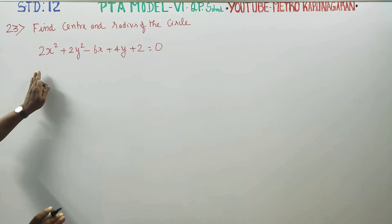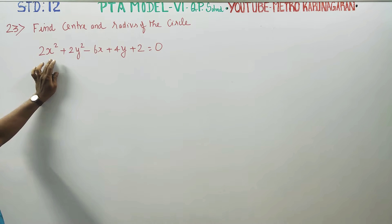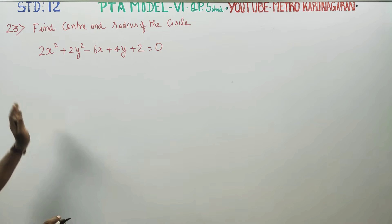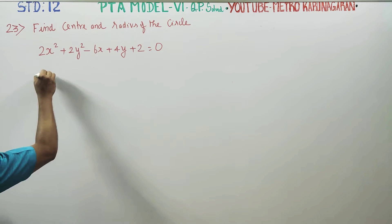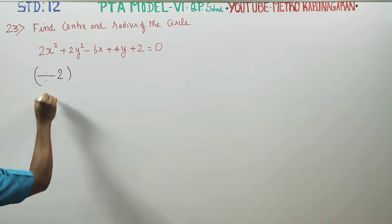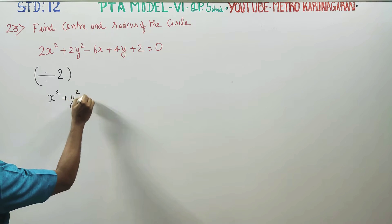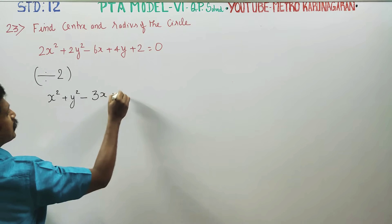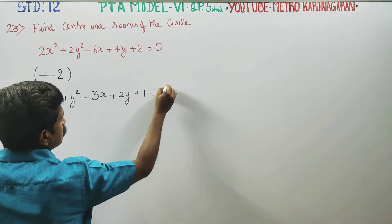First, I am going to divide all the terms by 2. If you divide by 2, you will be getting x squared plus y squared. If you divide 2, you will be getting 2 times y plus 1 is equal to 0.